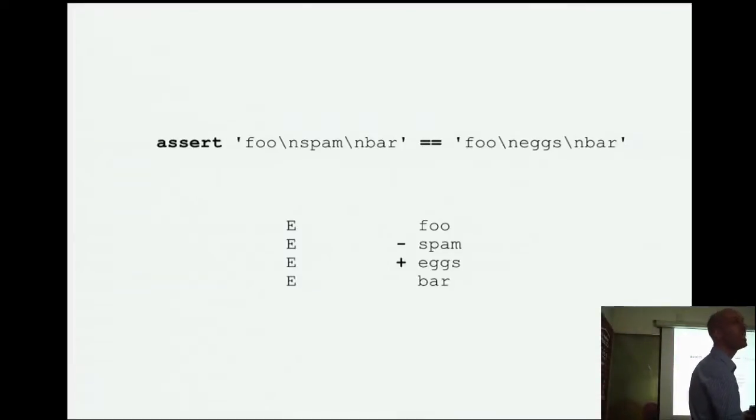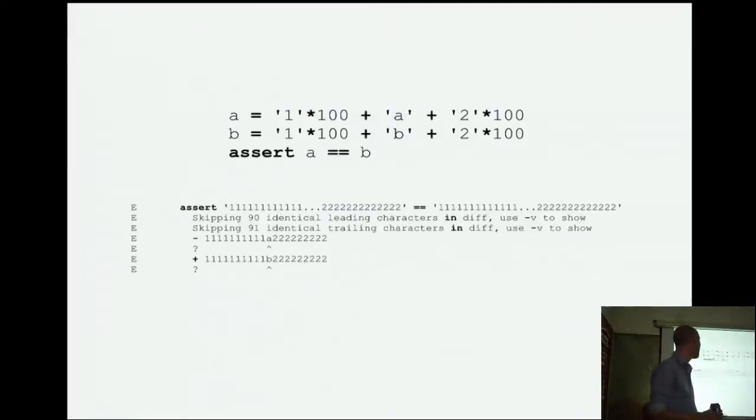It even does really, really long string differences. So, this is sort of a contrived example, but if we have a string A that's a hundred ones, and then an A, and then a hundred twos. And string B is a hundred ones, and then a B, and then a hundred twos. We try to assume that they're equal. It's going to say, right, okay, I did the assertion. For those of you in the back, it says, skipping 90 identical leading characters in diff gives dash B to show if you do want to see them all. And then it says, in this one, skipping 91 identical trailing characters. It tells you how many identical leading, how many identical trailing, and then it kind of zooms in to the part that's actually different and gives you that same little carrot. That's really sweet, like, right, the people who make PyTest have thought a lot about making your life easier. And again, this is all just with assert. We don't need to, it's not like assert multi-line happens to be equal. No, just assert.